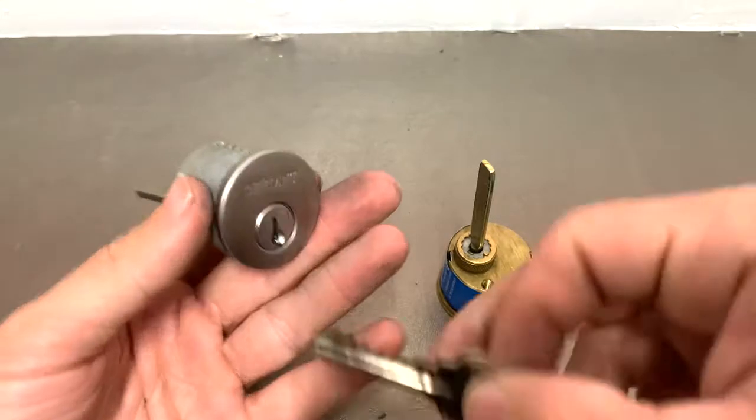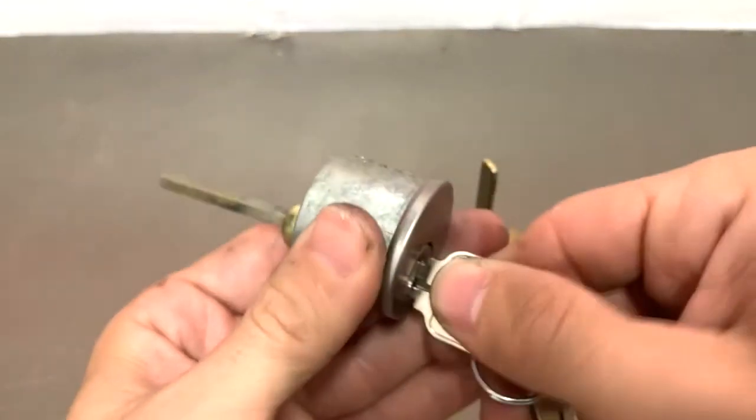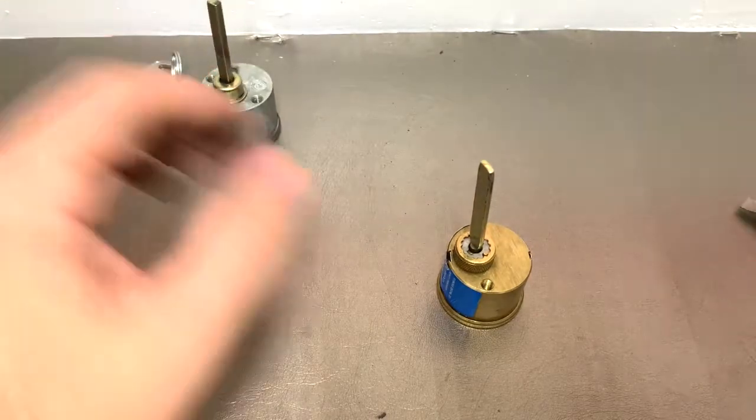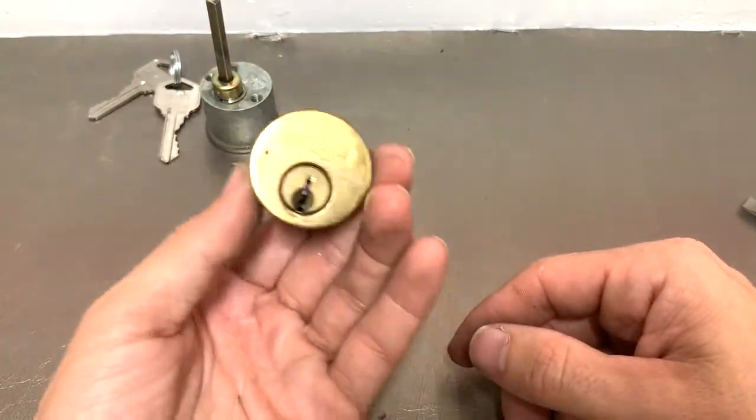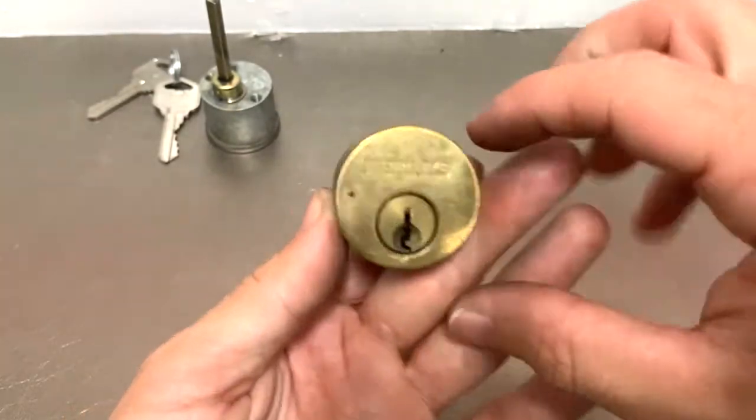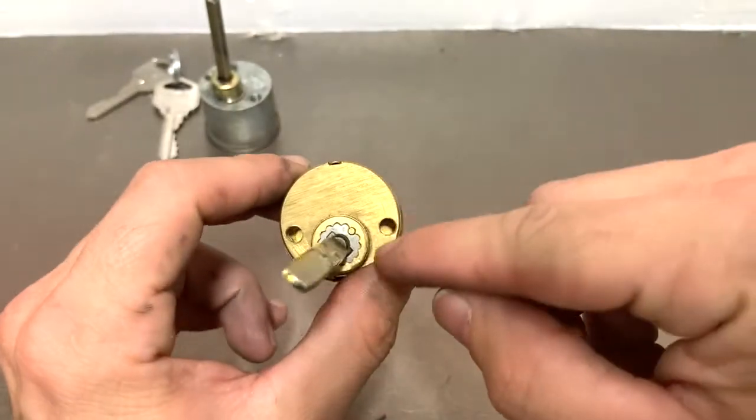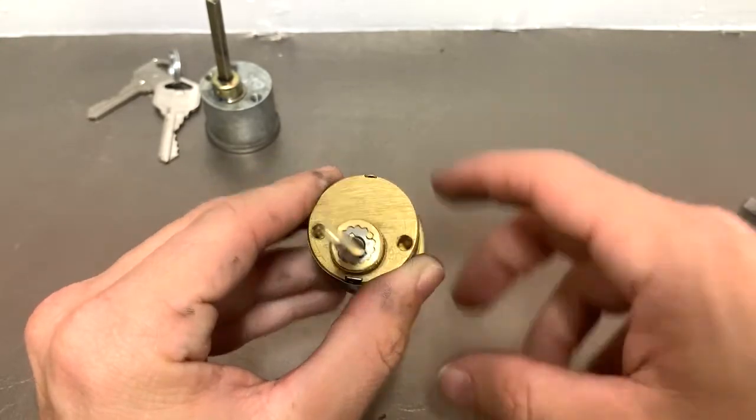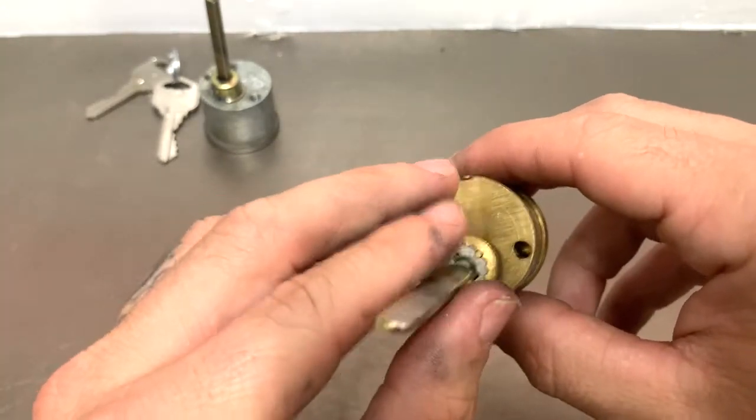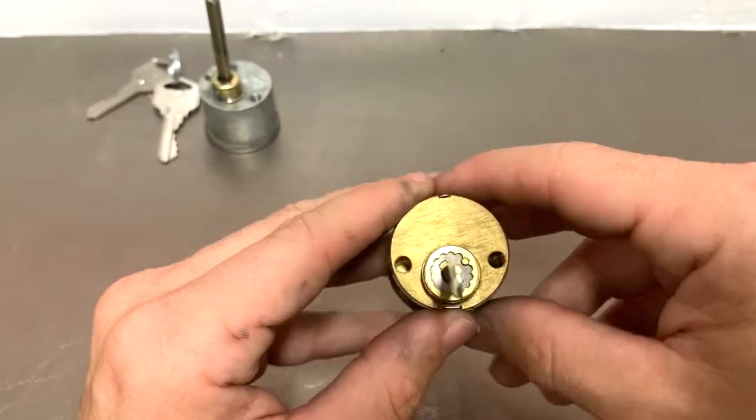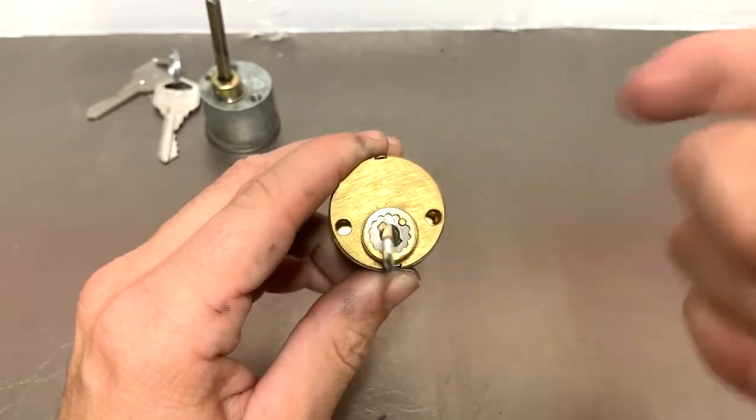Now with this style, this is a Brinks, this is from a deadbolt, and this is a common end cap that you'll find on Schlage and a lot of brands are using this now. A lot of the knockoff versions of Kwikset are using this type of end cap.